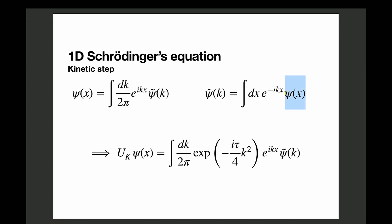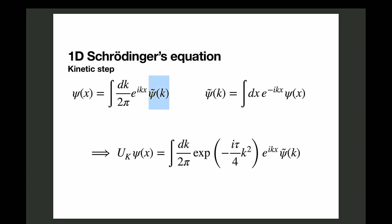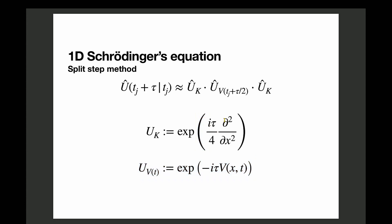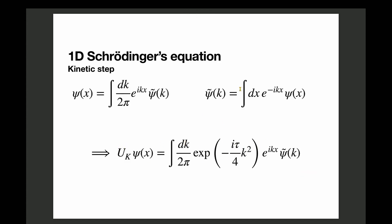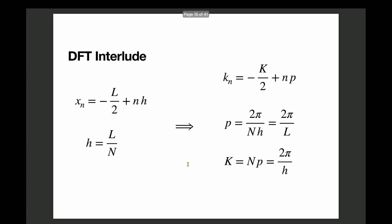If we're applying uK to psi — where uK was e to the i tau over four times the second partial derivative with respect to x — you can do the exercise of inserting this into the definition, and you'll find that the second derivative with respect to x becomes just k-squared in Fourier space. To handle this computationally, we define the discrete Fourier transform. We discretize, obtain a momentum spacing p, and each term psi_n is expressed as an inverse discrete Fourier transform of the corresponding vector.